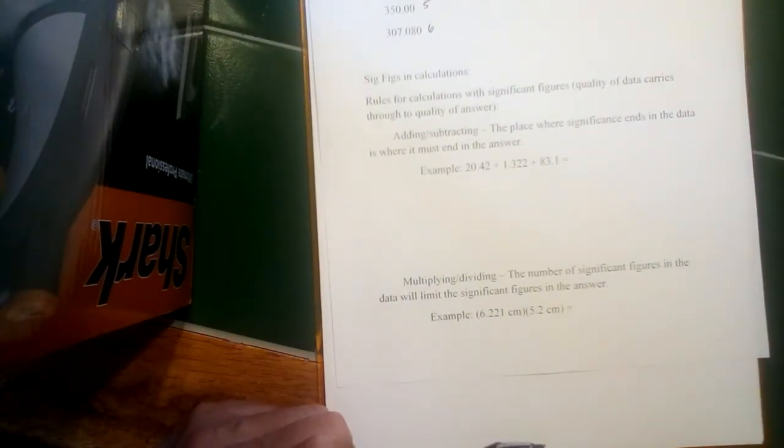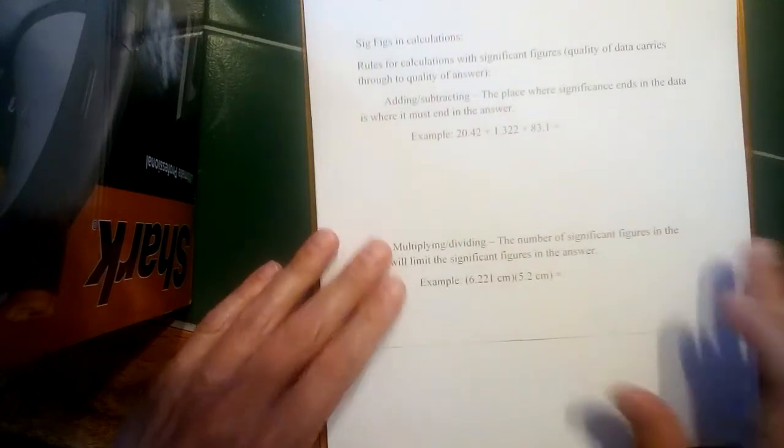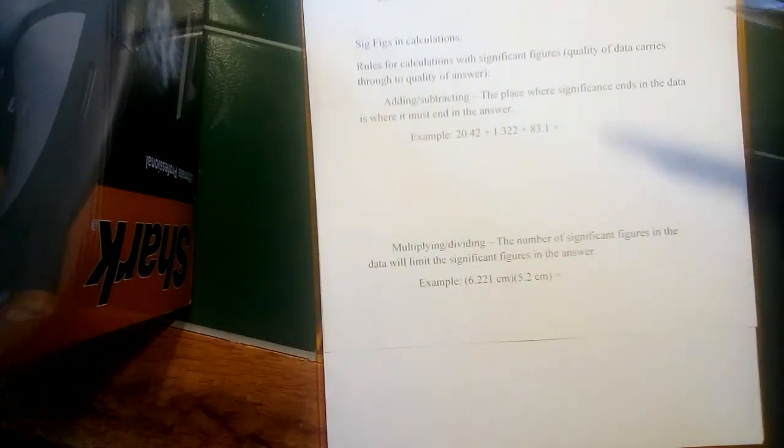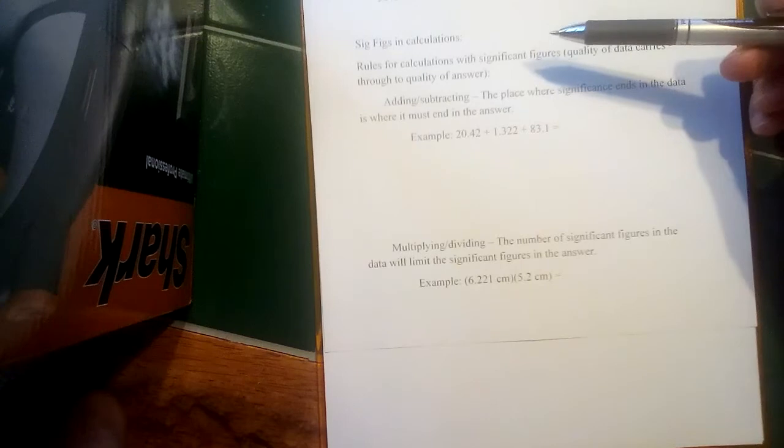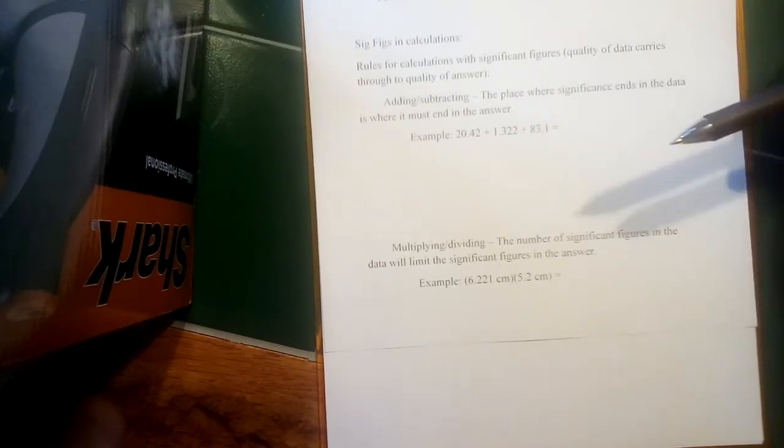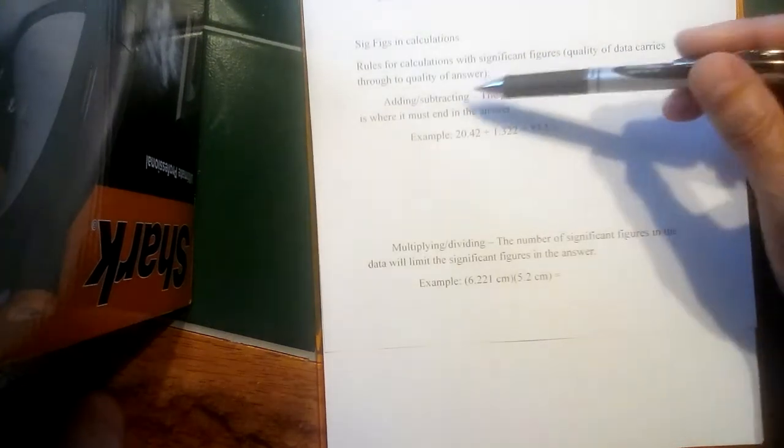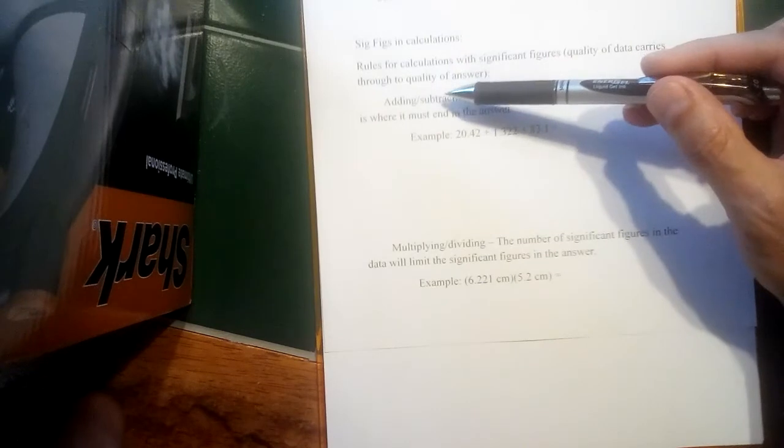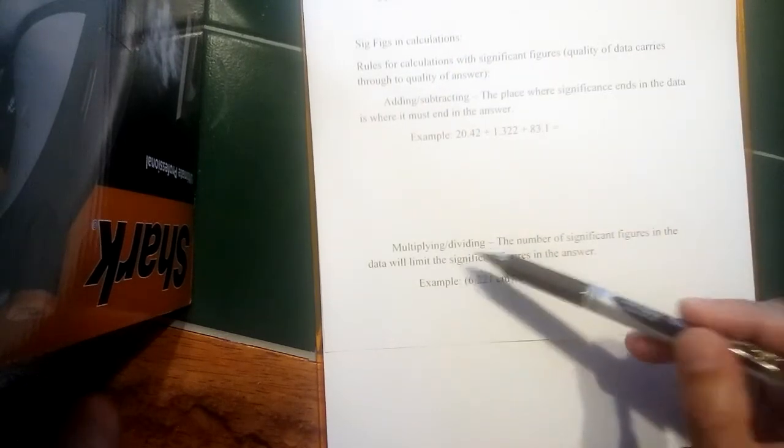So we want to look at what would happen when we do different types of calculations. So there are rules for how significant figures interact in terms of calculations. In this case, we're going to look at one rule for adding and subtracting, a separate rule for multiplying and dividing.